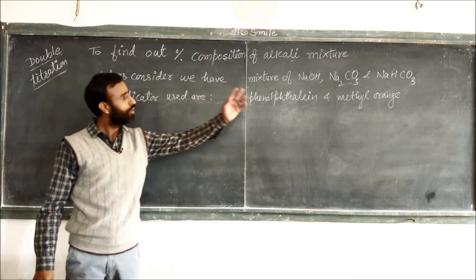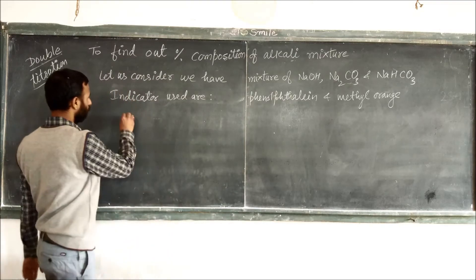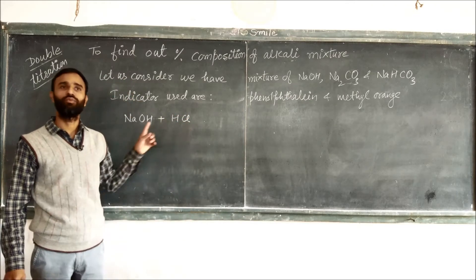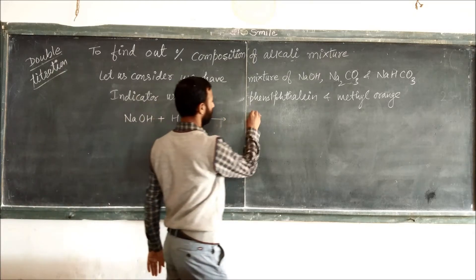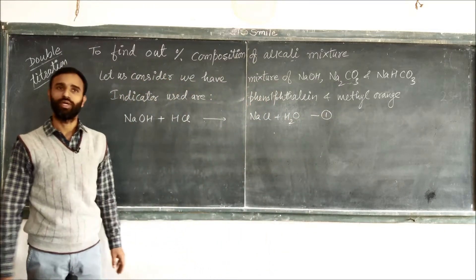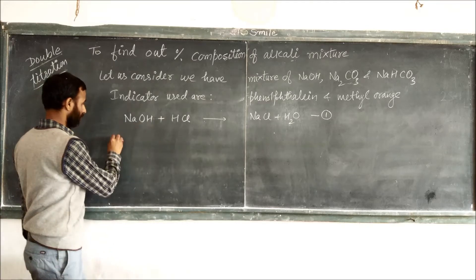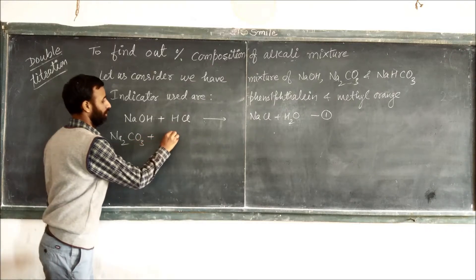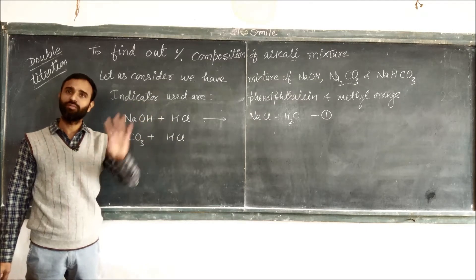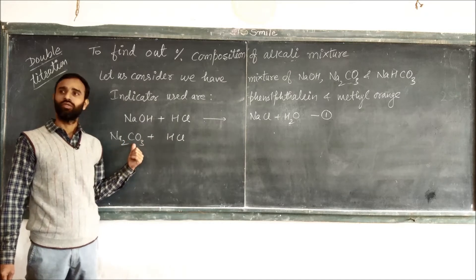Out of NaOH, sodium carbonate, and sodium hydrogen carbonate, NaOH is the strongest base. So in the first step, HCl reacts with NaOH to give NaCl and H₂O. This is reaction number one — first of all, HCl reacts with NaOH.